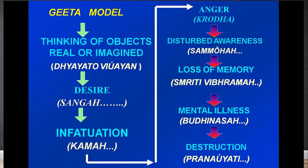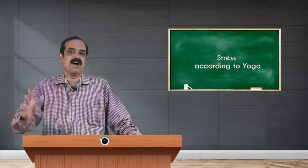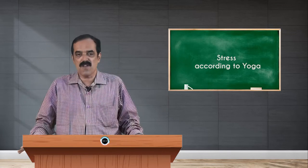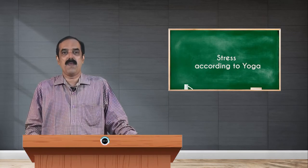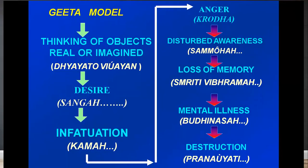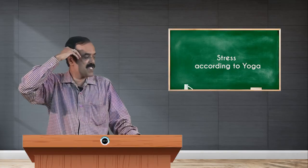Krodhat bhavati sammoha — from anger comes delusion. Sammoha leads to smriti vibramasha — loss of memory. That is what happens in krodha. We have conducted yoga programs in jail, and when you interview those people they say, 'I don't know.' For a single second they lost awareness, and that crime happened. Krishna says very beautifully: smriti vibramsha leads to buddhinasha — the intelligence power is lost and discrimination is completely destroyed.